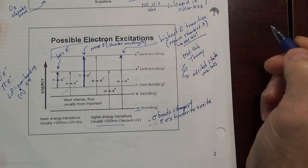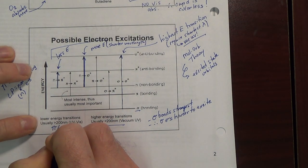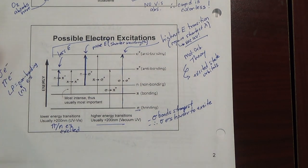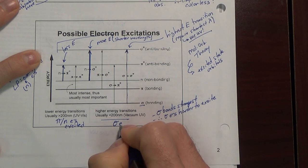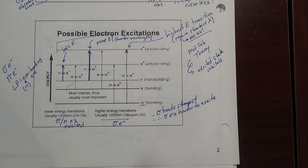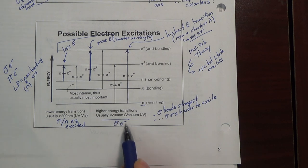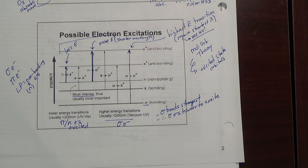Higher energy transitions are usually in the vacuum UV. Lower energy transitions are above 200 nanometers. Most of the time, above 200 nanometers, it's going to be your pi and n electrons being excited. Most of the time, your high energy transitions — usually in the vacuum UV — are going to be sigma electrons. Stronger bonds are more difficult to excite. Electrons in stronger bonds tend to be more difficult to excite. The pi to pi star transition is usually the most intense.